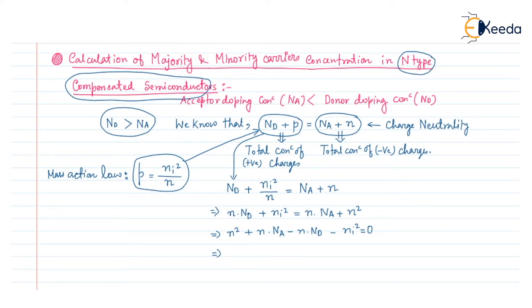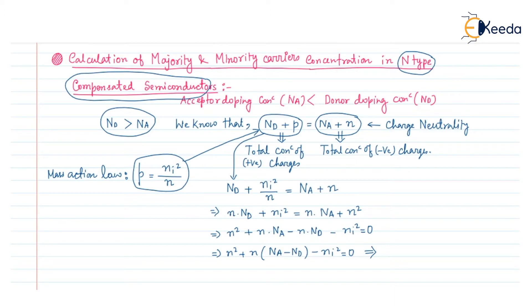So, from this equation we can see that this is a second-order equation in N, that is, it is a quadratic equation of N.